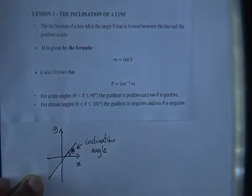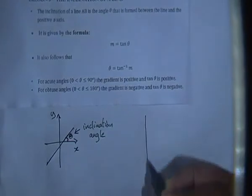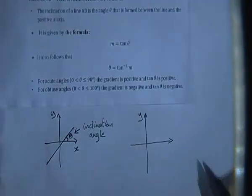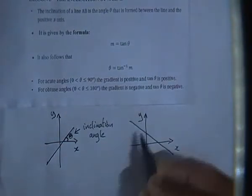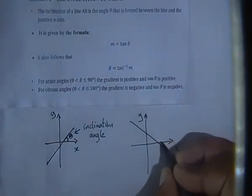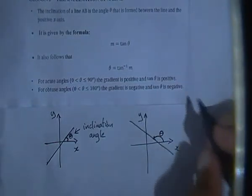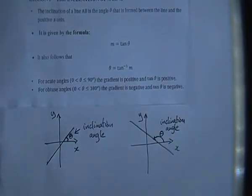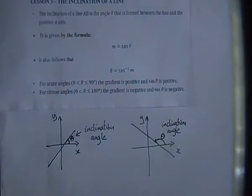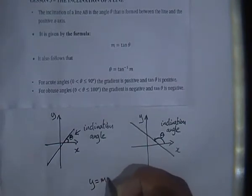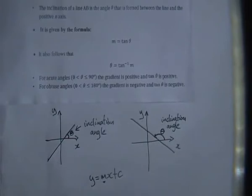Whenever we find the inclination of a line, we are finding that angle theta. If the graph has a negative gradient, the angle is measured anti-clockwise. To find the inclination angle, you need to know the gradient of the line — sometimes it's given, sometimes you have two points and must calculate it, or you have the equation and need to write it as y = mx + c.